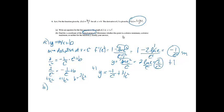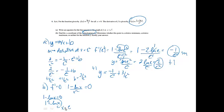Critical points occur where the derivative equals 0 or is undefined, and we'll determine whether this point is a minimum, maximum, or neither with justification. Setting 1 minus ln(x) over x squared equal to 0, critical values occur where the numerator equals 0 or the denominator equals 0. Adding ln(x) to both sides and applying the logarithm, I get x equals e. Setting the denominator equal to 0 gives x equals 0, but since x must be greater than 0, we discard that. Critical point: x equals e.